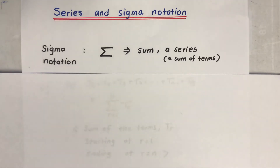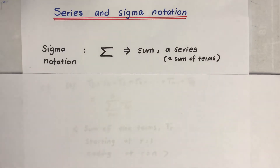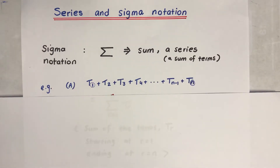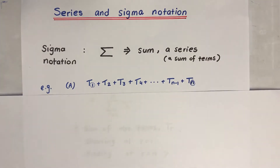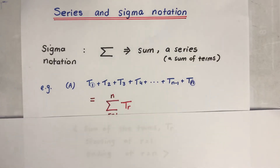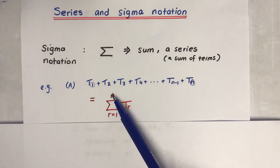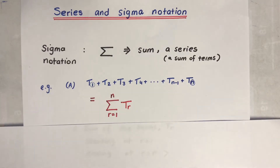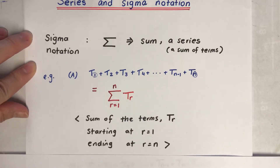Okay, series and sigma notation. Sigma notation looks like this and it means a sum, or a series, which means a sum of terms. For example, a series goes from the first to the nth term, and this is how we represent it with sigma notation - it starts from 1 and goes up to the nth term. That's the formula.